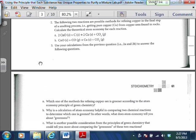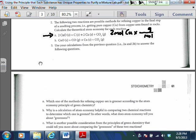Number two, the following two reactions are possible methods for refining copper in the final step of a smelting process. And then it gives you the two reactions and it wants the atom economy for each reaction. So the way we're going to do this, atom economy is based on mass, not on moles. But we can use the moles to get to mass. So if I have in this reaction, this top reaction here, if I have two moles of copper, I can change that to grams of copper.